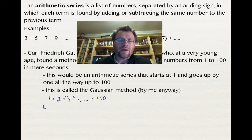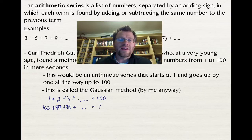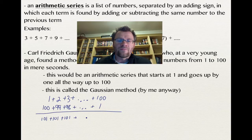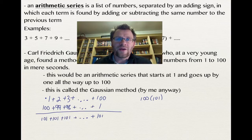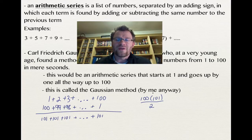What he did is he wrote down 1 + 2 + 3, all the way to 100, and then wrote it backwards: 100 + 99 + 98, all the way down to 1. He realized that adding each pair from the top and bottom rows gives 101 every time. Since there were 100 terms, he had 100 × 101, and since he added two series together, he divided by 2 to get the sum of just one — that's how Gauss added 1 to 100 in seconds at about age 10.